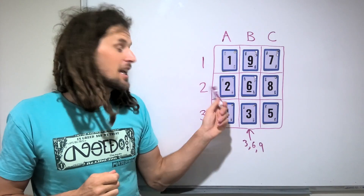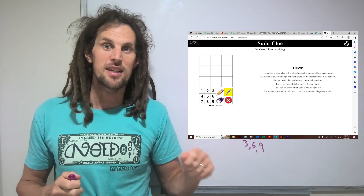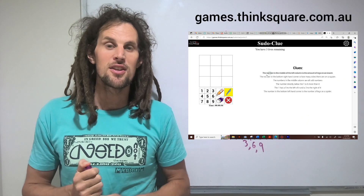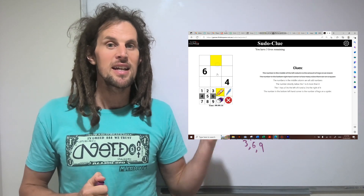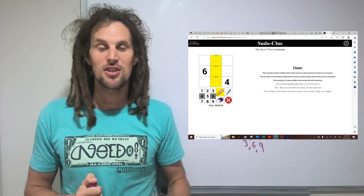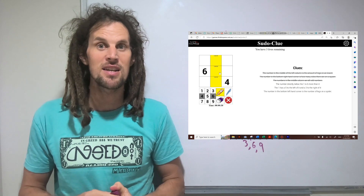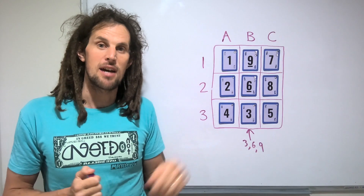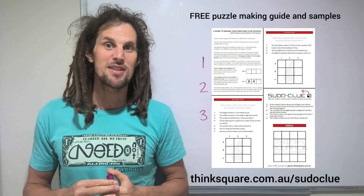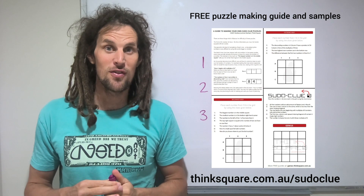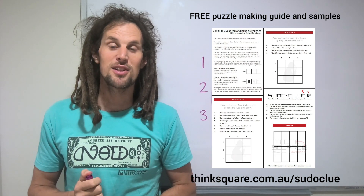If you'd like, there are some three-by-three and four-by-four puzzles on the game suite at games.thinksquare.com.au. Click on Sudoku and there are a number you can play for free. If you want hundreds of them, subscribe to the game suite for a couple of bucks per student and get access to that and a whole range of other mathematical intentional fun games. If you'd like to download hard copies, there's a four-by-four using numbers 1 to 16 — super tricky, probably take you half an hour to an hour to solve.